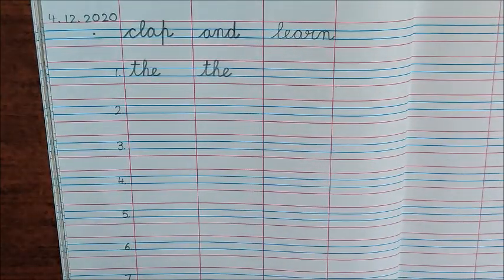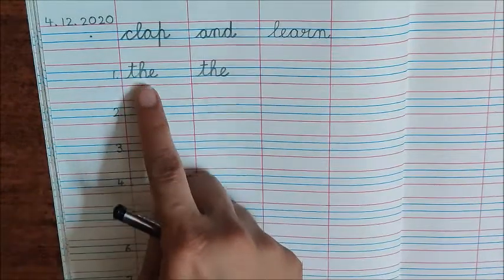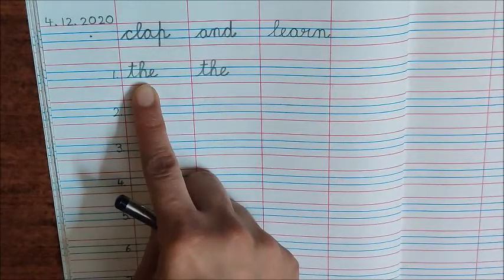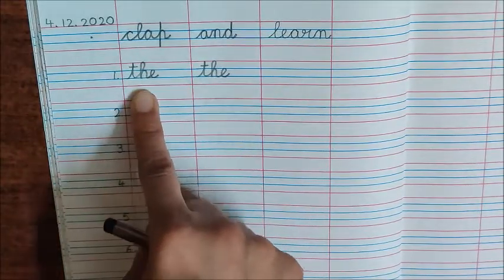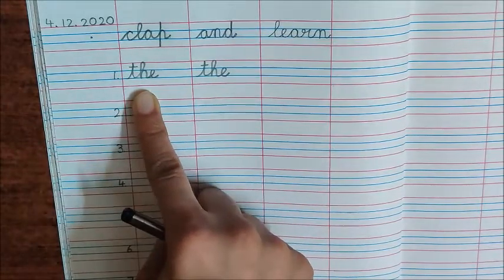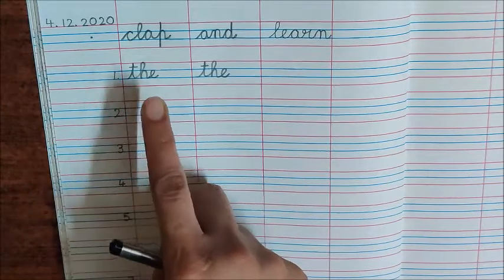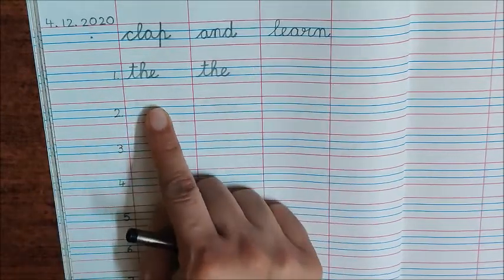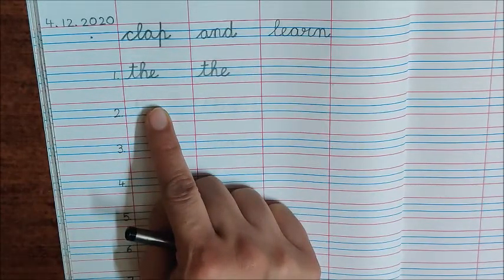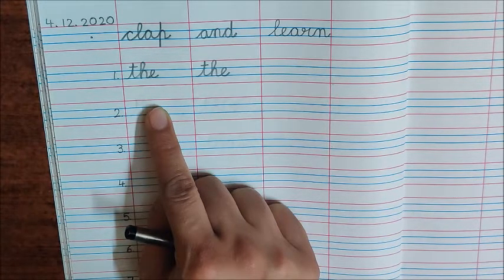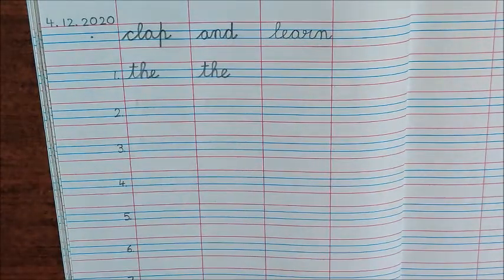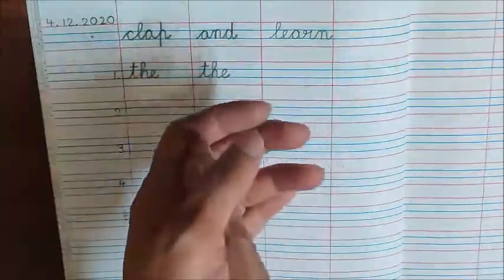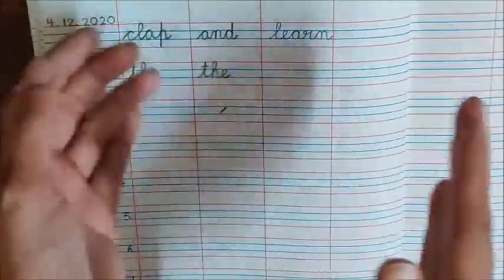Each letter we will write two times. For what things do we use 'The'? I told you — the sun, the moon. Now children, our next word is used for things which are near. What do we use for things near us? This. What are the letters in the word This? T, H, I, S — This.